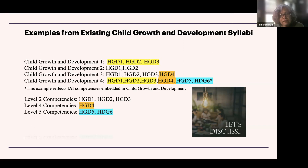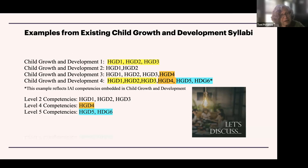Another participant adds that the competencies do build on each other. If you go through all the HGD competencies, the content and skills required as you go from level two up to level five increase and build on each other, so you are adding to what you would expect a student to be able to do. There is that connectivity there — it's not as if they're all the same or not connected to each other.